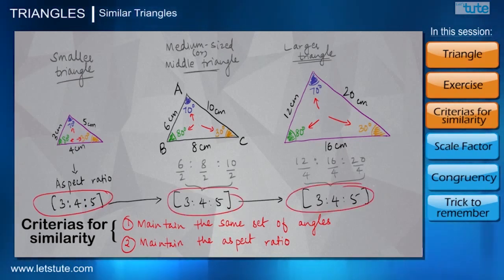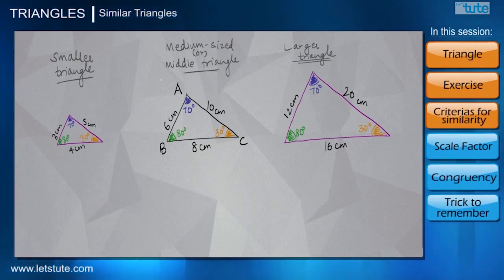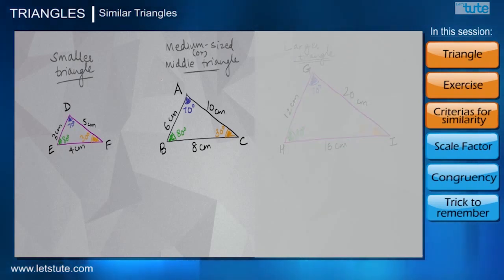But there is a way in which these sizes must vary, and only then they shall be called similar. So let's learn that concept too. How about naming the smaller triangle as DEF and the larger triangle as GHI? So let's just ignore the larger triangle for a moment, and quite clearly we can see the smaller triangle DEF is actually half in size of the medium triangle ABC.